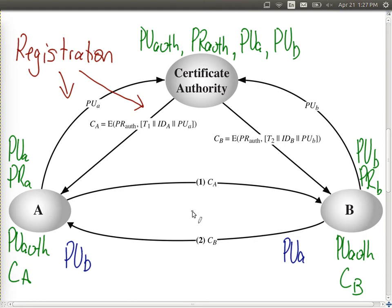What attacks can be performed on certificates? The obvious attempt is to modify the certificate. The goal is for A and B to learn each other's public key — if B gets what it thinks is A's public key but it's actually someone else's, that malicious user can intercept messages. An attacker might try to change the certificate, replacing A's public key with the malicious user's.